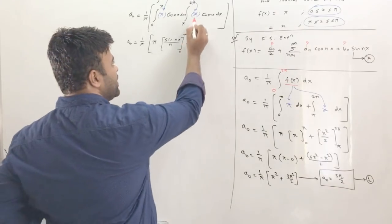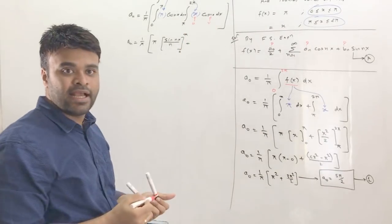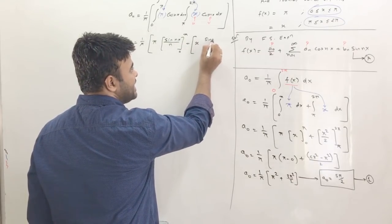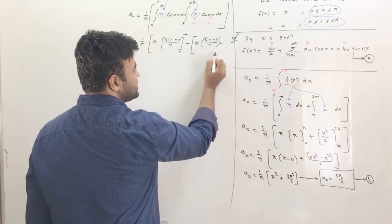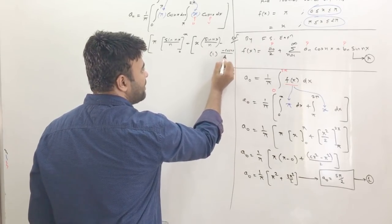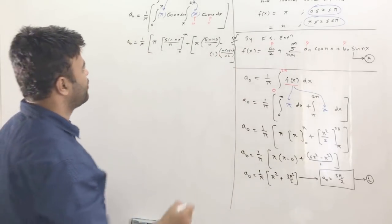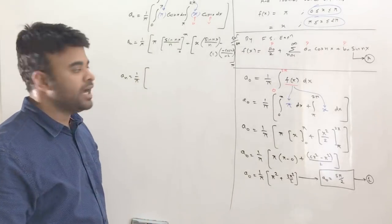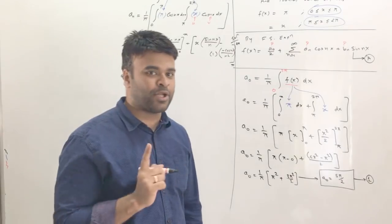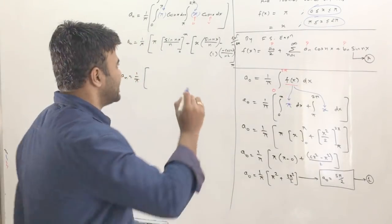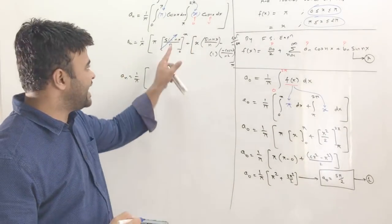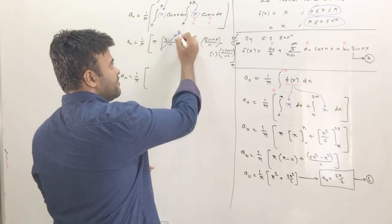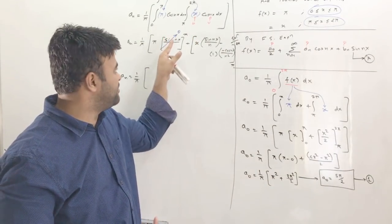For the second piece from π to 2π, f(x) = x, so we apply the uv rule. Here x is u and cos(nx) is v. This gives: x·sin(nx)/n minus (−cos(nx)/n²), evaluated from π to 2π. Note that sin(nπ) and sin(0) are both zero, so those sin terms vanish entirely.